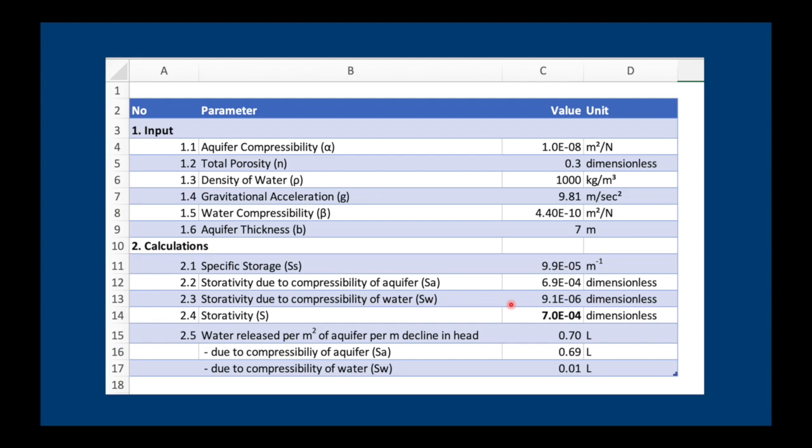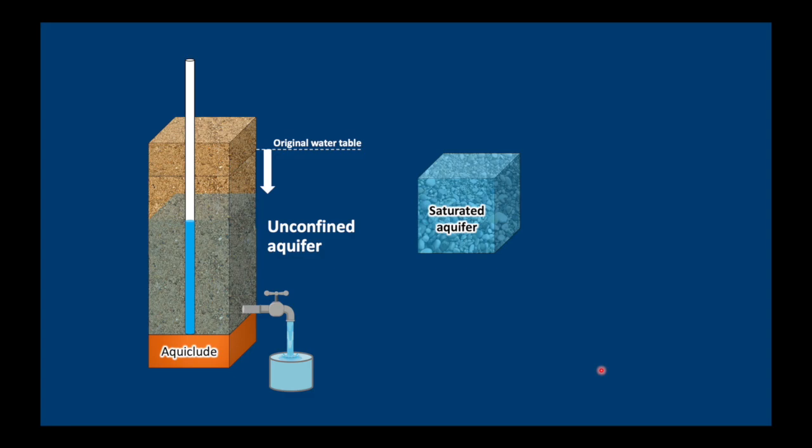I've made a spreadsheet where you can do all these calculations automatically. You just enter your numbers in here, and it will calculate the different specific storage and so on. What's quite interesting is in this example, per square meter of aquifer and one meter decline in head, we only get 0.7 liters of water. And most of that water is due to the compressibility of the aquifer, rather than the compressibility of water.